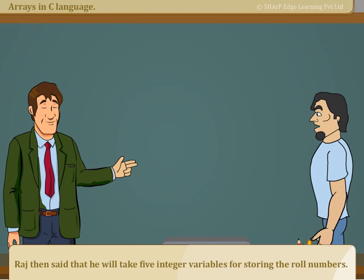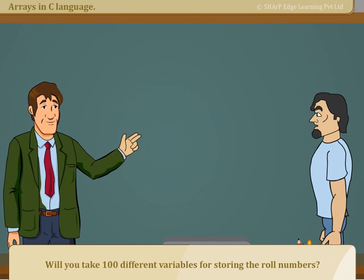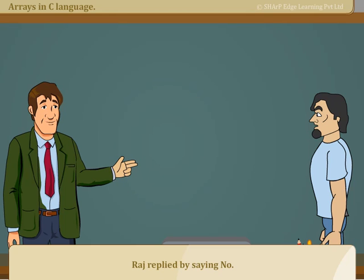Raj then said that he will take 5 integer variables for storing the roll numbers. Then the teacher said that if the number of students goes up to 100, then what will you do? Will you take 100 different variables for storing the roll numbers? Raj replied by saying no.